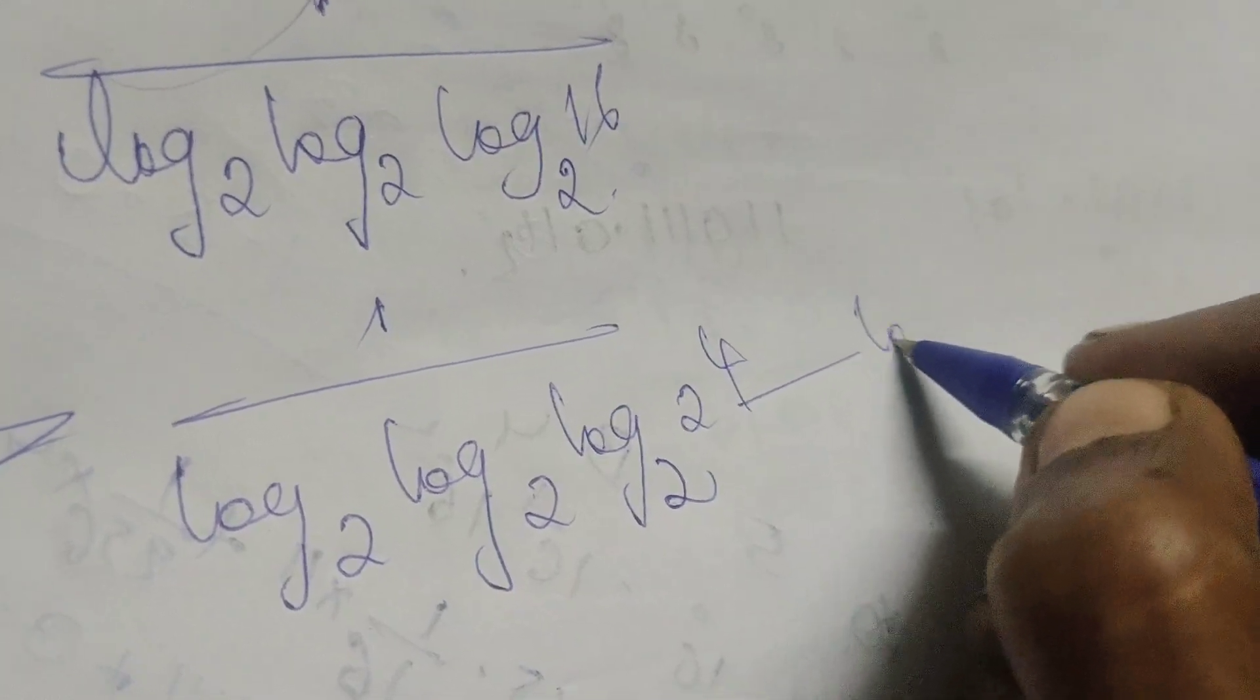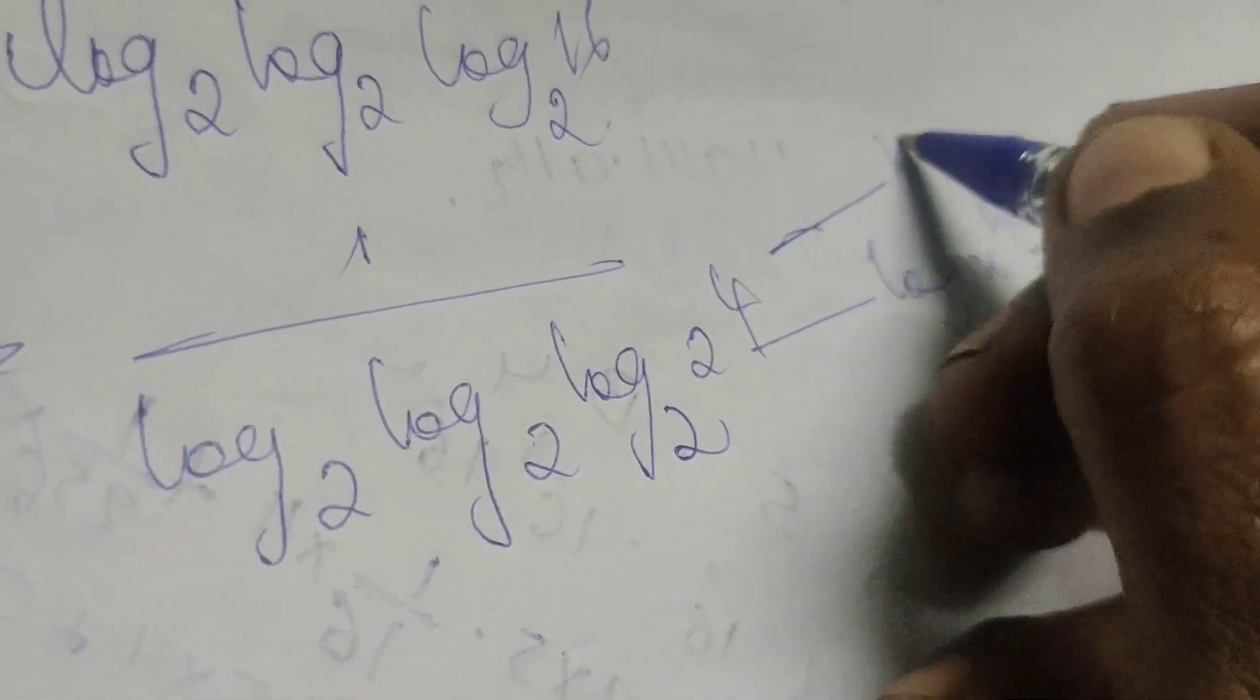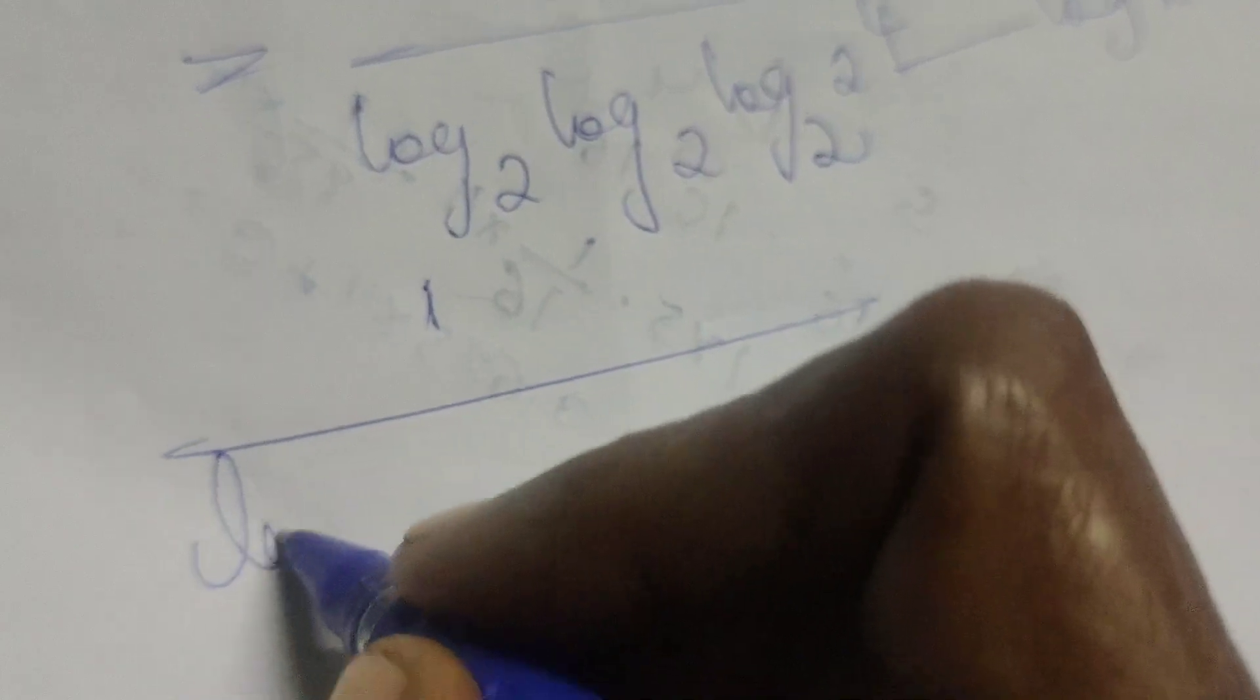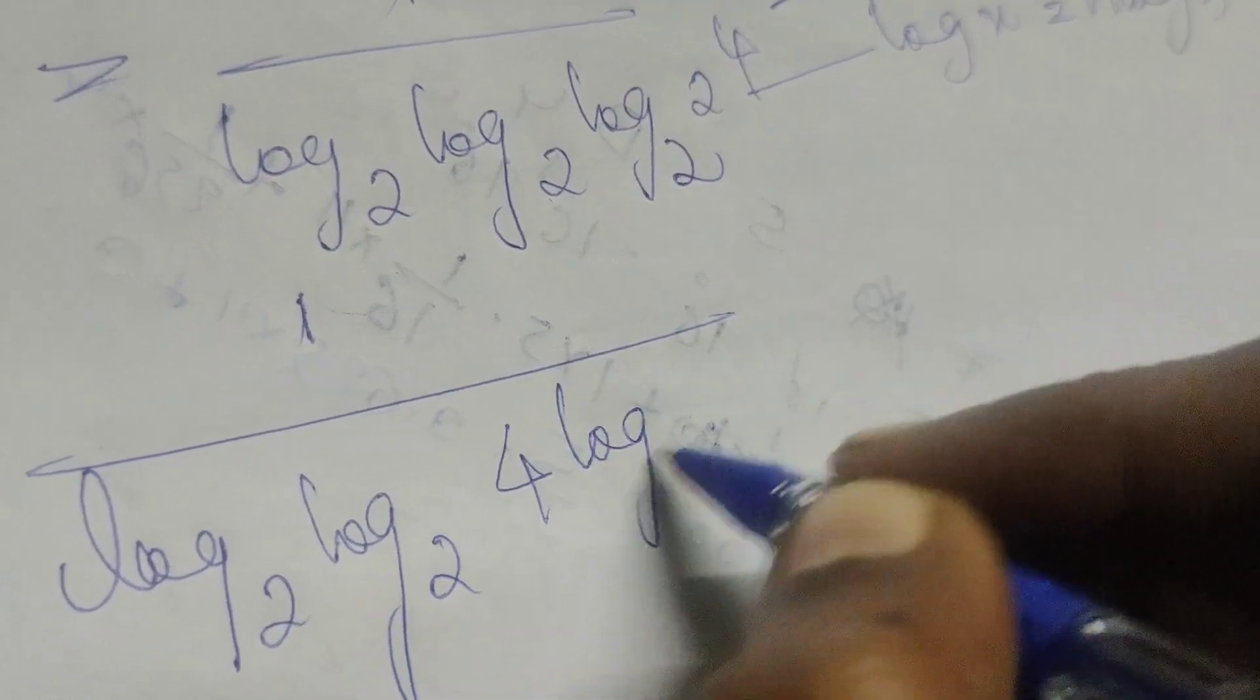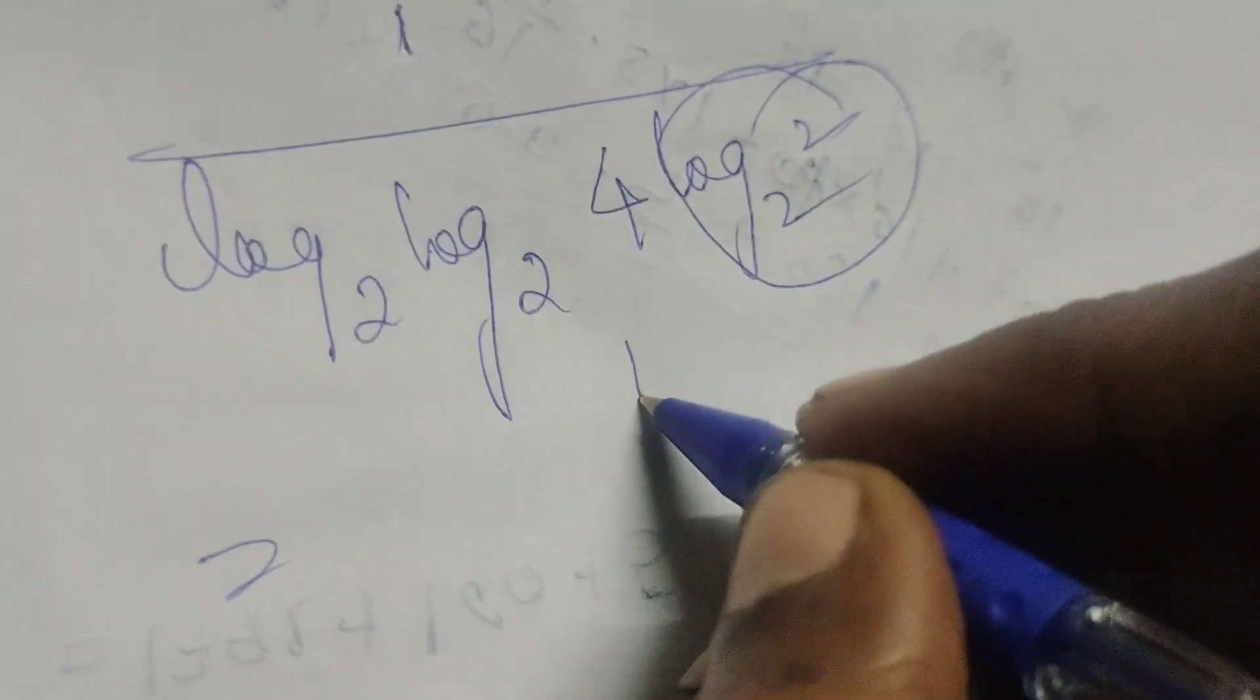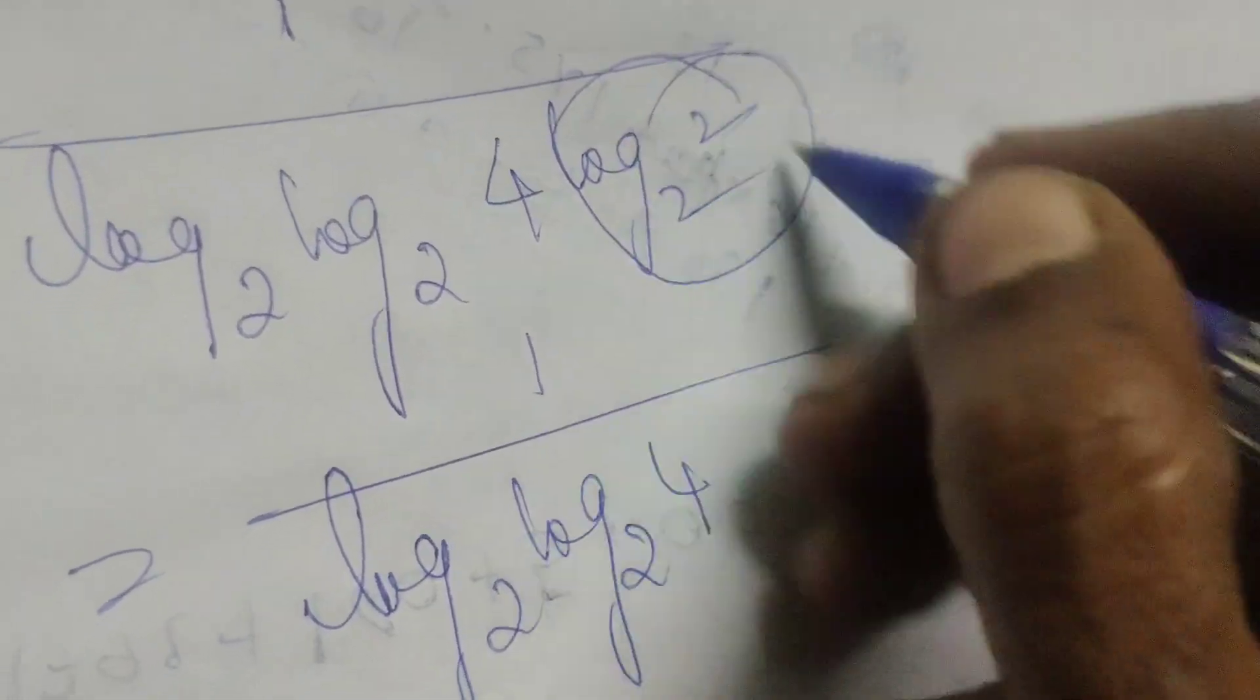Here, using the formula log x to the power n equals n log x, where n equals 4. Therefore, 1 over log base 2, log base 2, 4 log base 2 of 2. Log base 2 of 2 equals 1, so we have 1 over log base 2, log base 2 of 4. This is 1.